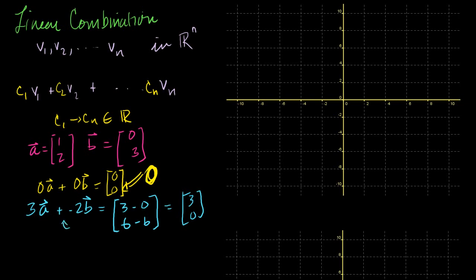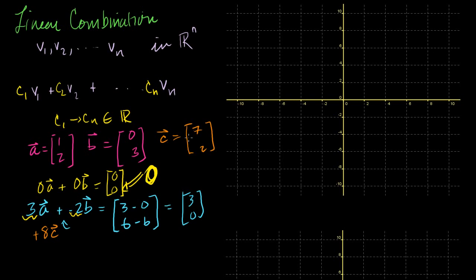I could keep putting in a bunch of random real numbers and I'll just get a bunch of different linear combinations of my vectors a and b. If I had a third vector c — maybe [7, 2] — I could throw in plus 8 times vector c. These are all just linear combinations.